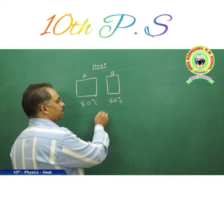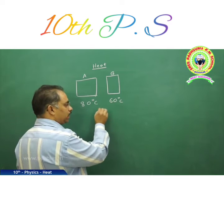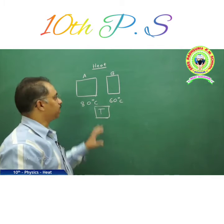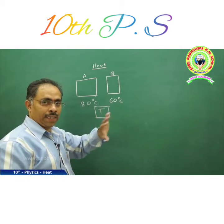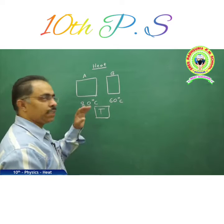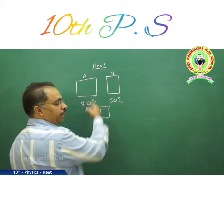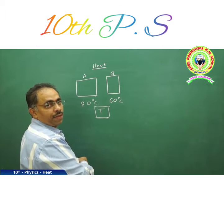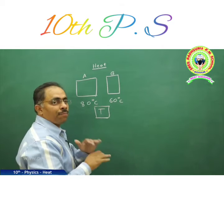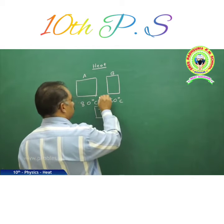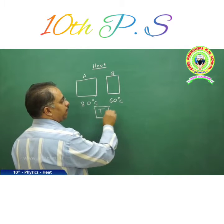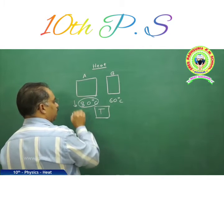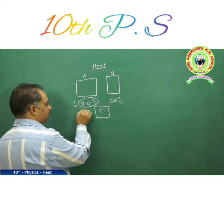If we want to measure the temperature of these two bodies, we use a thermometer — a third body — kept in contact with each separately to determine the temperature of each body. When these two are in contact, heat flows from one to the other and finally settles at one common temperature. From 80 degrees, it will decrease — say it comes down to 70.